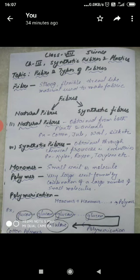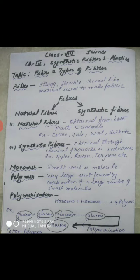How are synthetic fibers made? To understand the process of making synthetic fibers, let us do one activity. We take about 10 to 12 clips and join them together to make a long chain. These smaller clips are known as monomers and that long chain is known as a polymer. A synthetic fiber is also a chain of smaller units joined together, where smaller units are monomers and the larger unit is the polymer.